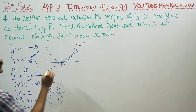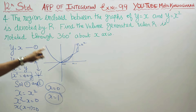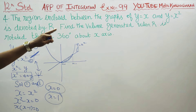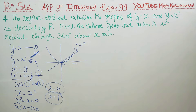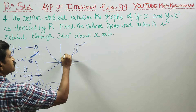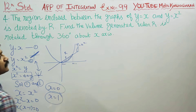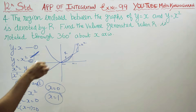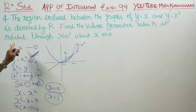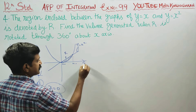We need to find the region enclosed between y = x and y = x², then rotate it through 360 degrees about the x-axis to find the required volume.